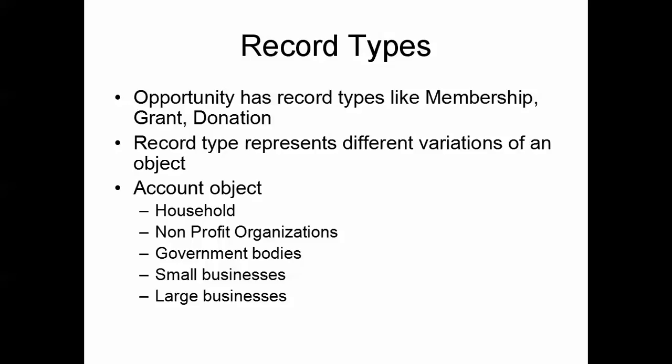The look and feel we want to show — for example, the information we want to capture for a household — may be very different than the information that needs to be captured for a government body. In such a scenario, we can use different record types for Account to capture the different business scenarios that the account represents.